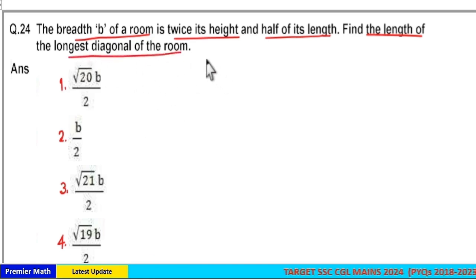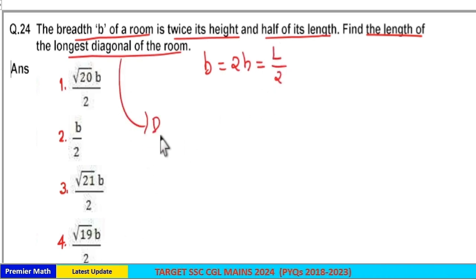Here, breadth of the room is twice its height and half of its length. Now, longest diagonal of this room is equal to root of square of length plus B square plus height square.